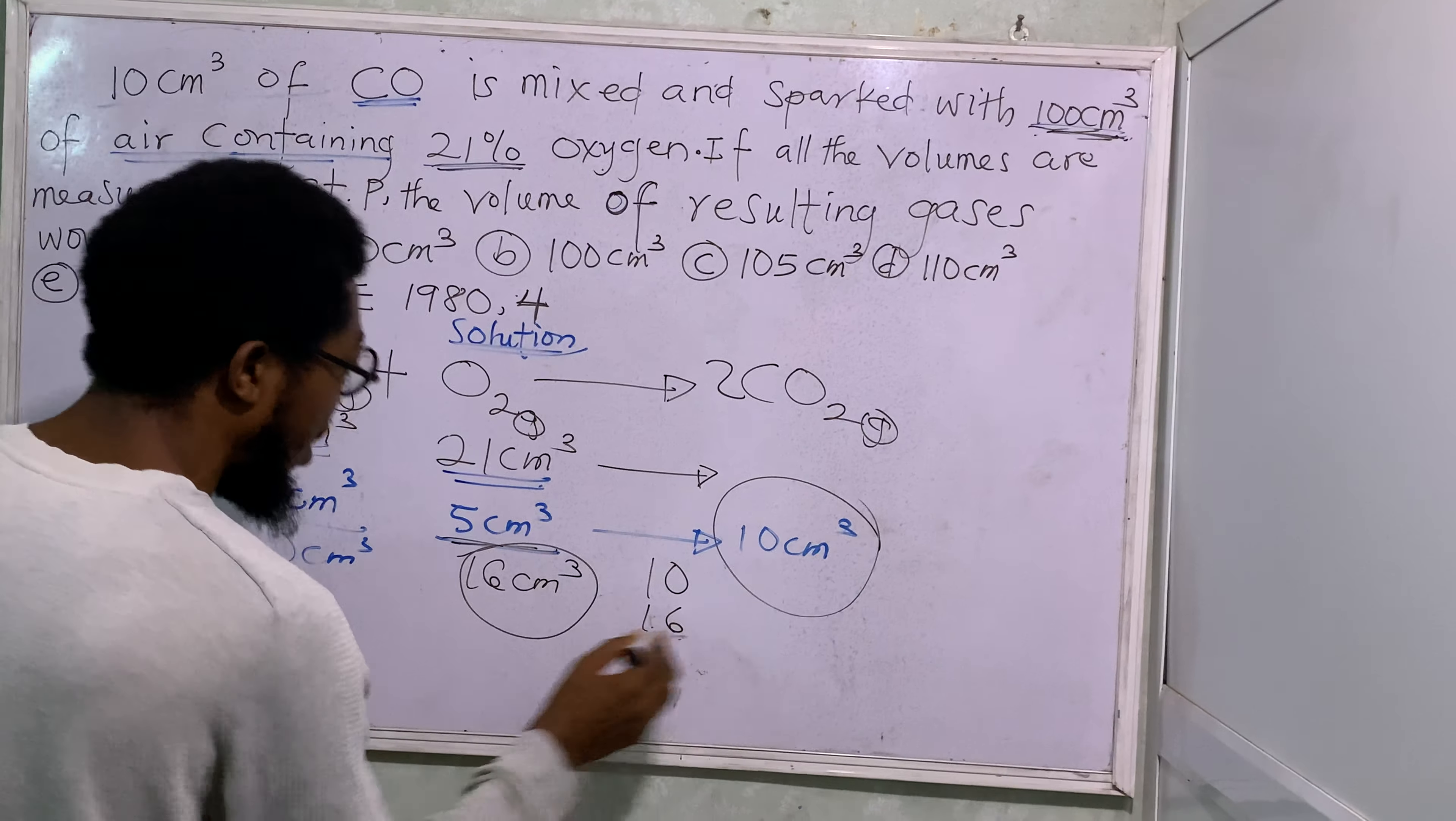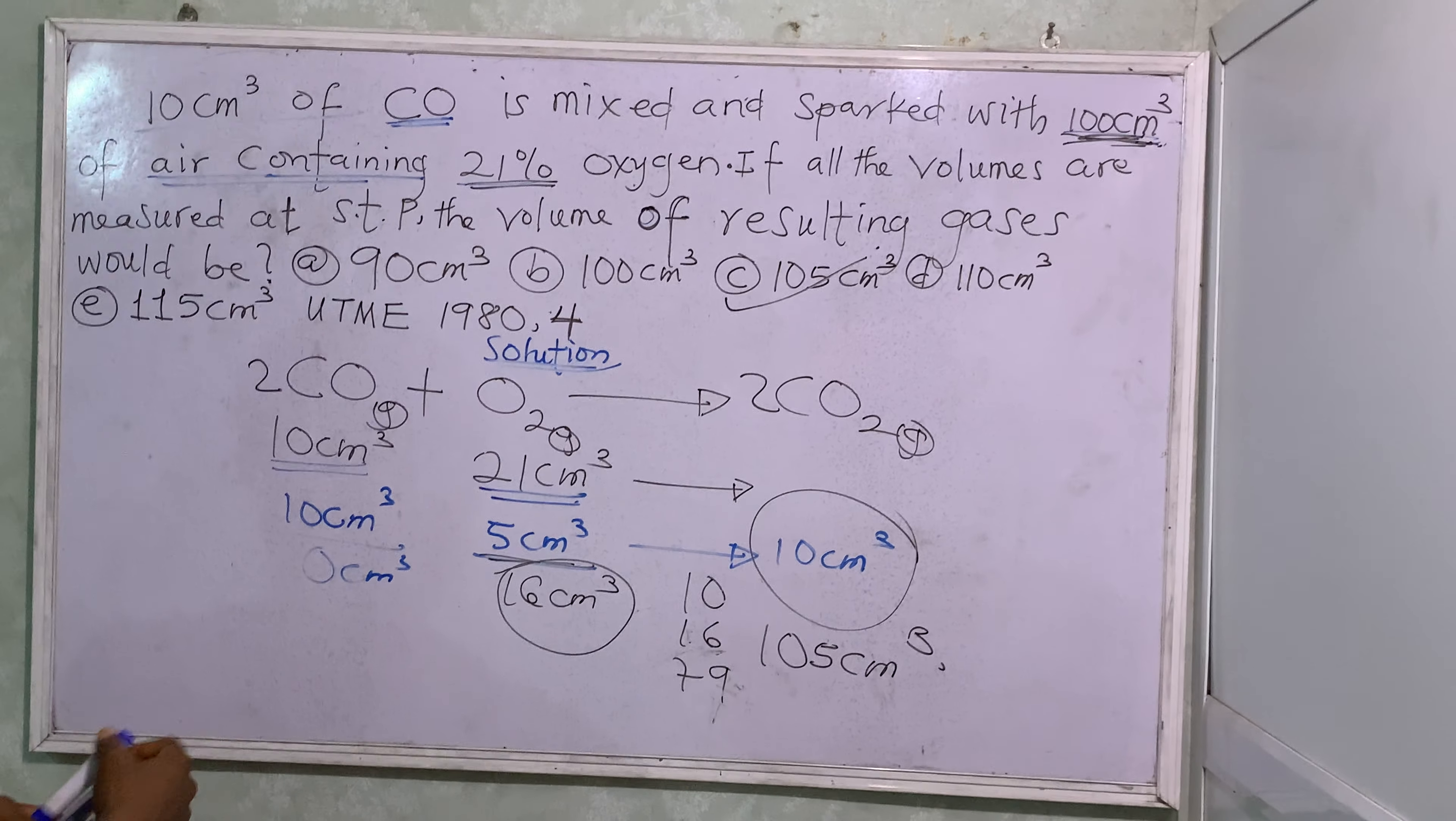And that will give us how many? 10 plus, okay. Next, we will take one from here, making 80, making 19, making 15. So 19 plus 15. That will be 105 cm³. So this is option C. Option C is the correct answer here.